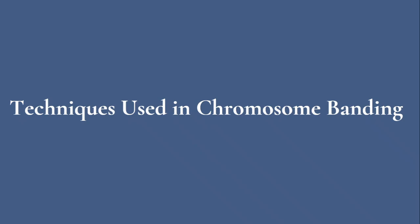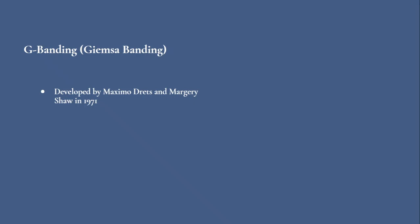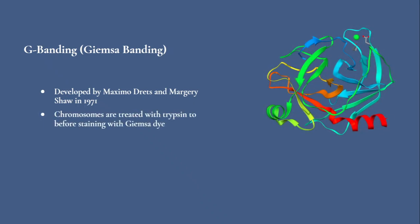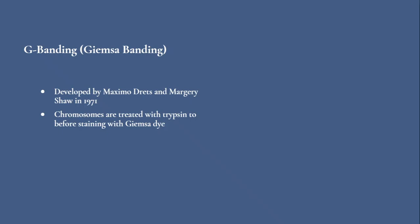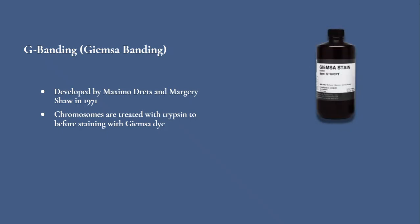Six of these would be considered. G-banding was developed by Maximo Dretz and Marjorie Shaw in 1971. In this method, metaphase chromosomes are treated with trypsin to partially digest proteins, followed by staining with Giemsa dye, a complex mixture of dyes.